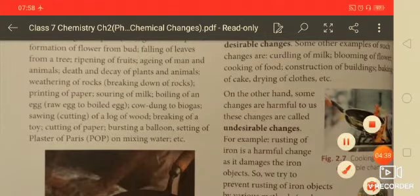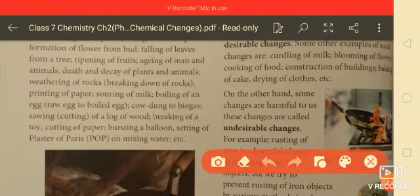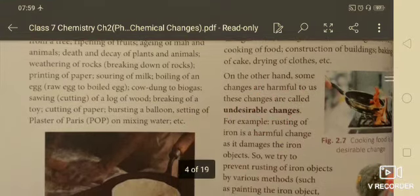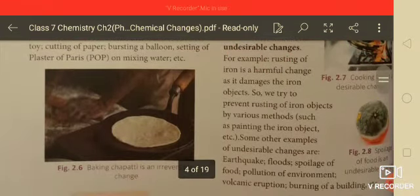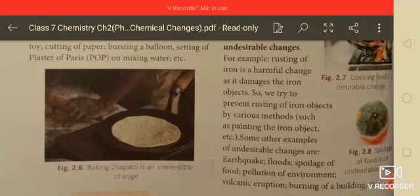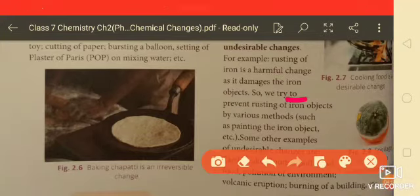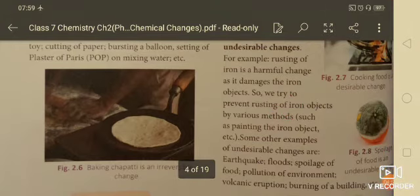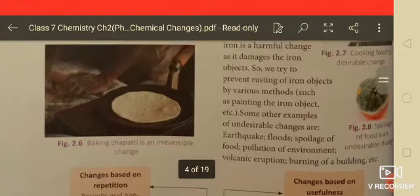On the other hand, some changes are harmful to us. These are called undesirable changes, like rusting of iron, which damages iron objects. We try to prevent rusting by galvanization, by painting, etc. Earthquakes, floods, spoilage of food, and pollution of environment—these all are undesirable changes.